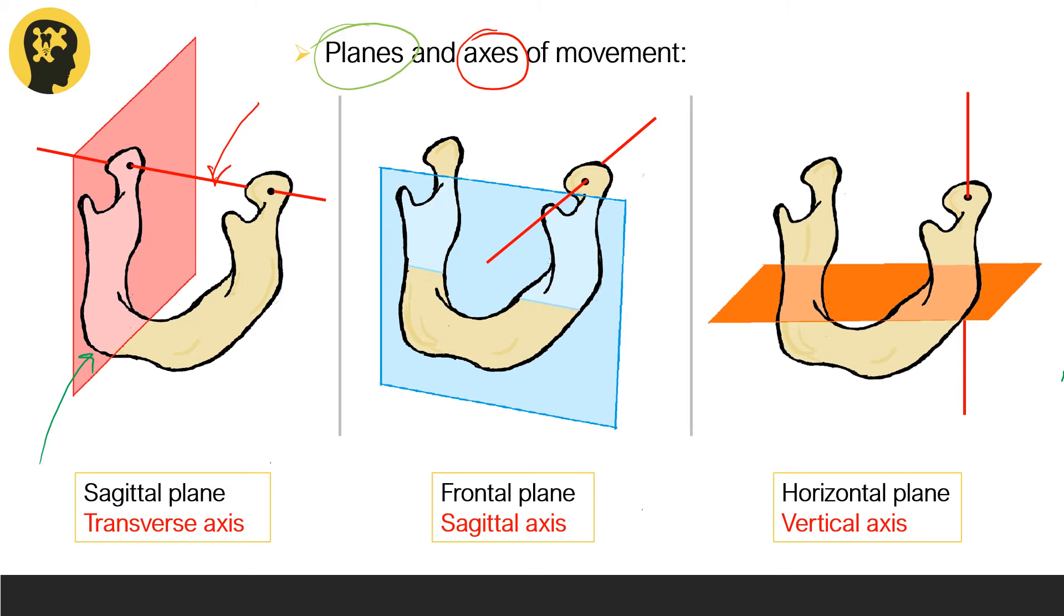When the mandible rotates about the transverse axis, the mandible will move up and down. This up-and-down movement of the mandible occurs about the sagittal plane. Similarly, movements occur about the sagittal axis on a frontal plane, or movements occur about the vertical axis in a horizontal plane.